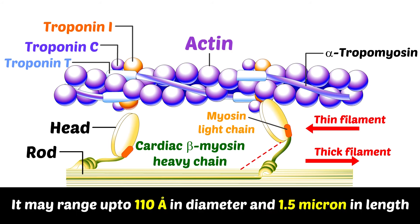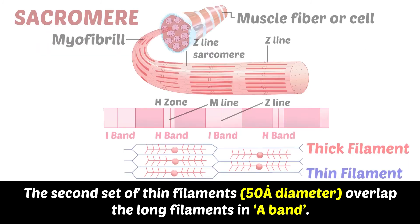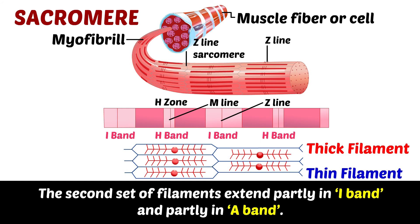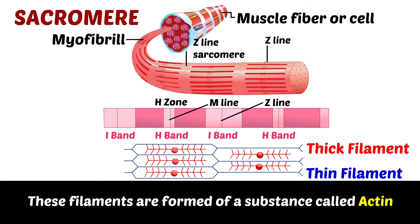Myosin filaments may range up to 110 angstroms in diameter and 1.5 microns in length. The second set of thin filaments, i.e. 50 angstroms in diameter, overlaps the thick filaments in the A band. These thin filaments extend partly in the I band and partly in the A band, and are formed of a substance called actin.